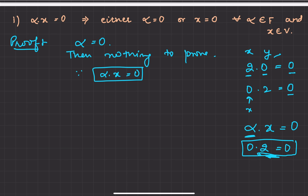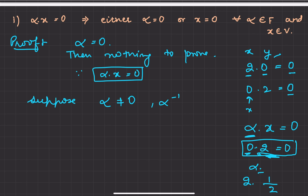Now we have to show that x can also be 0. Suppose alpha is not equal to 0 — it is some non-zero element like 2, 3, or 4. Then its multiplicative inverse must exist. Since alpha is a field element, its inverse also belongs to the field. So we can operate on both sides of alpha·x equals 0 with alpha inverse.